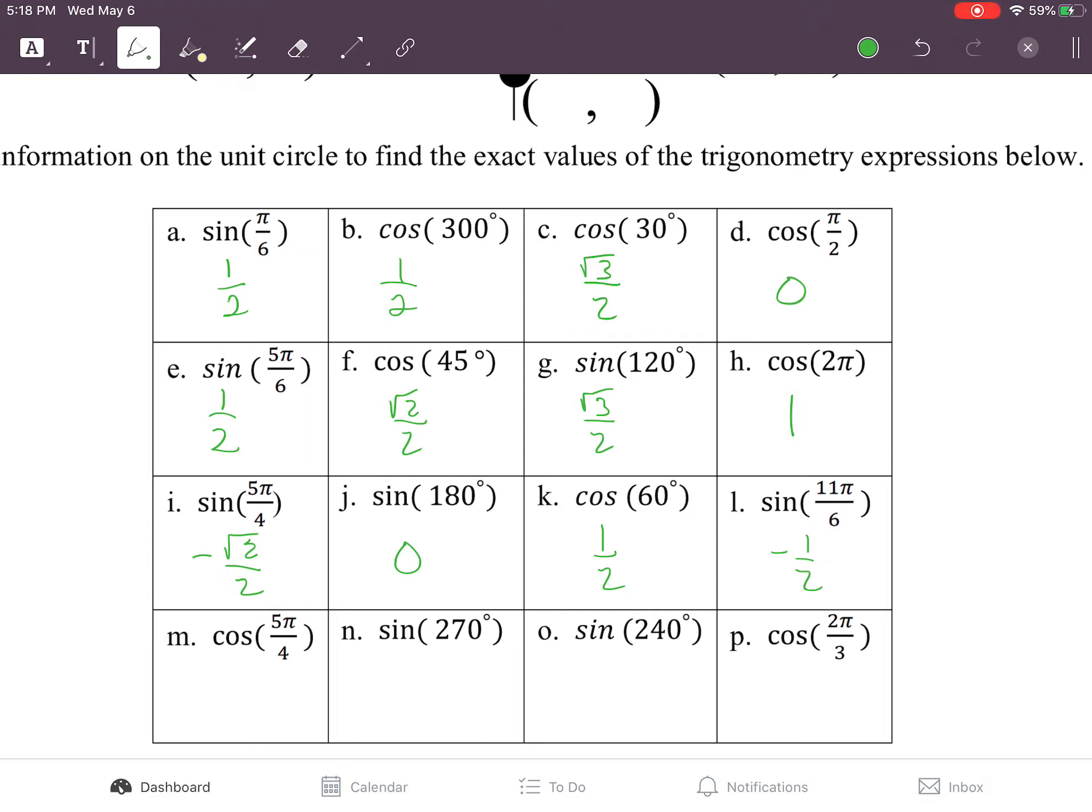At 5π over 4, the x term is negative root 2 over 2. At 270 degrees, the y value is negative 1. At 240 degrees, the y value is negative root 3 over 2. And at 2π over 3, the x value is negative 1 half.